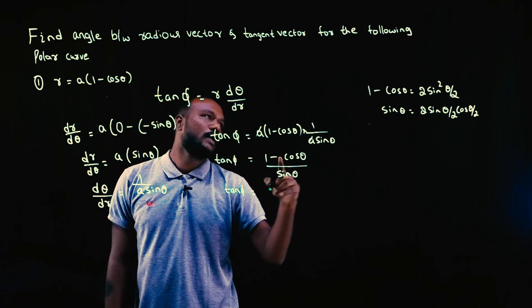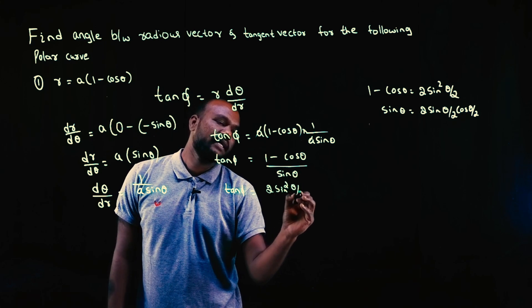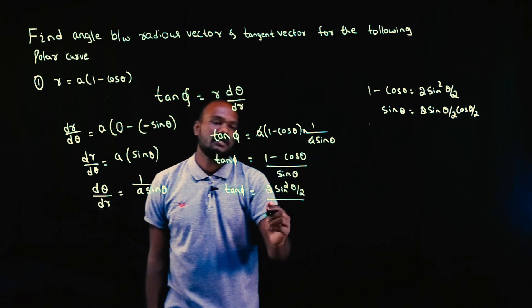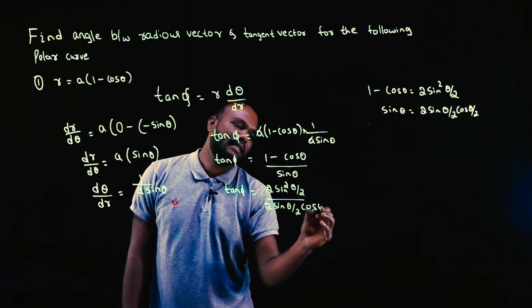So tan φ is equal to 1 minus cos θ is what? 2 sin² θ/2 over sin θ is what? 2 sin θ/2 cos θ/2.